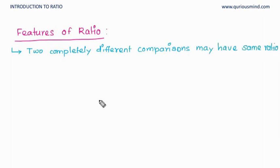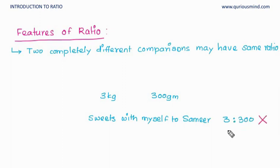One more thing, let's say I had 3 kg of sweets and Samir has 300 grams of sweets. Now what is the ratio between me and Samir? The ratio is 3 is to 300, correct? No, it is not correct, because this ratio indicates that Samir has more than me. But if you see here, I have 3 kilograms and Samir has only 300 grams, so Samir has less.